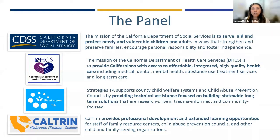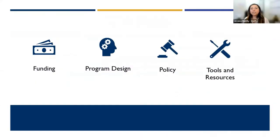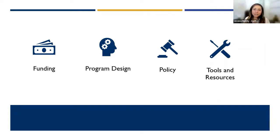Let me give you an idea of what this Q&A is going to look like for the next hour or so. The questions submitted during and after the Roadmap to Comprehensive Prevention Planning webinar were sorted into four main categories. Those four main categories, in order, will be: funding, program design, policy, and tools and resources. These were the most commonly asked questions.